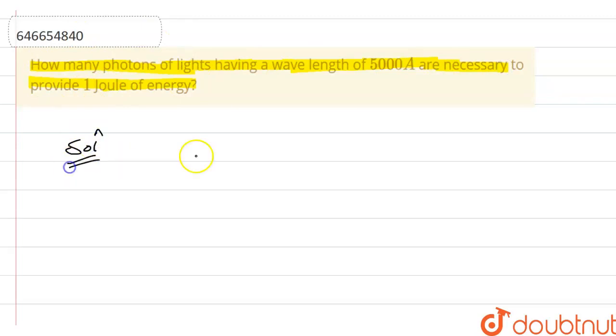So as you know, the formula required here is E equals n times hc upon lambda, where n is the number of photons.